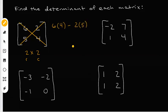We multiply those two numbers together, and I always put a subtraction sign in between because we're always going to be subtracting at the end. Six times four gives you 24, two times five gives you 10, and 24 minus 10 gives you 14. So my answer is 14 — that's the determinant of that matrix.